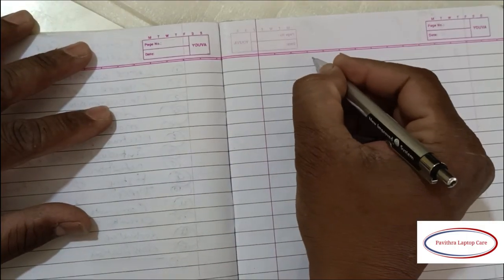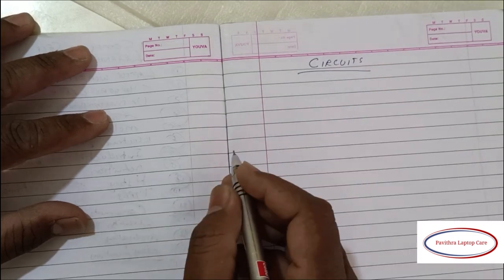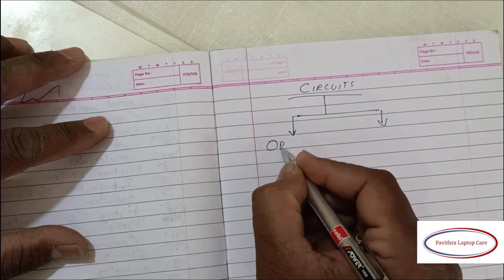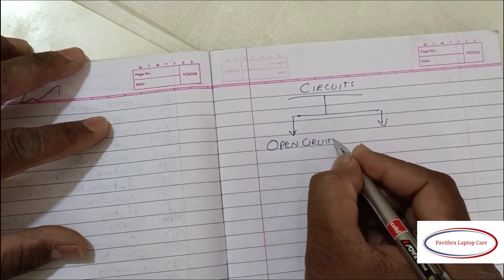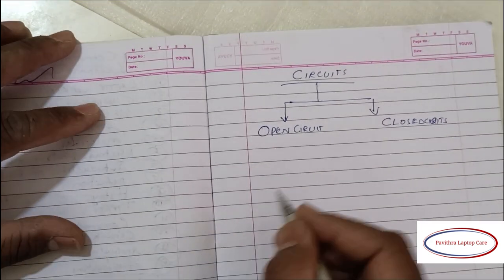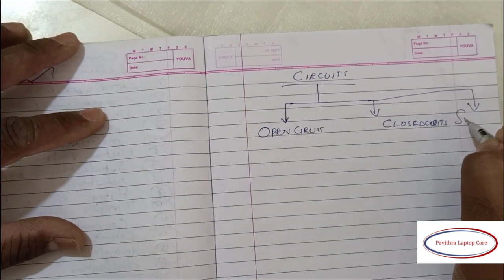Now I will try to explain one by one in a simple manner. See, in circuits: open circuit, closed circuit, and short circuit. Three kinds we can divide it.